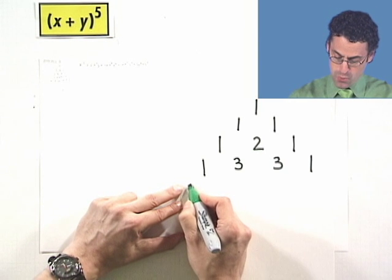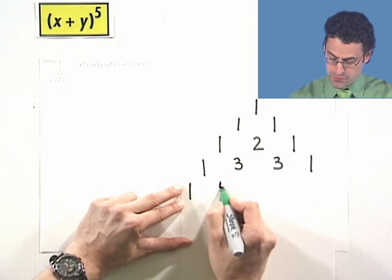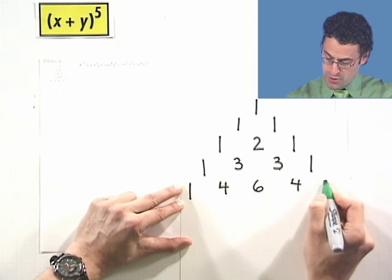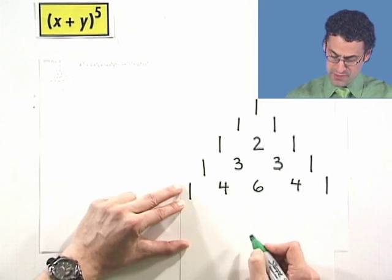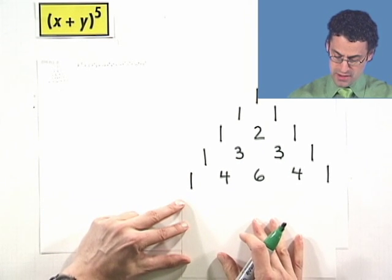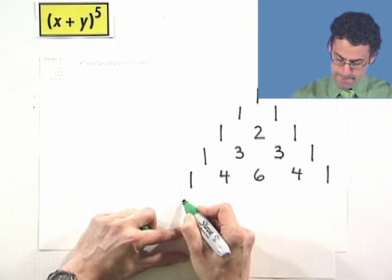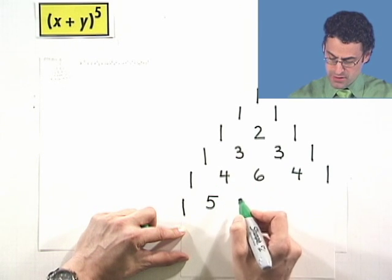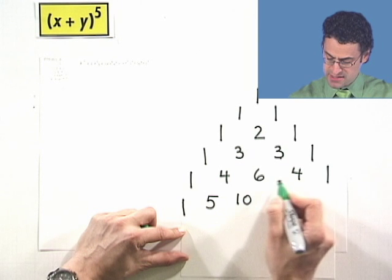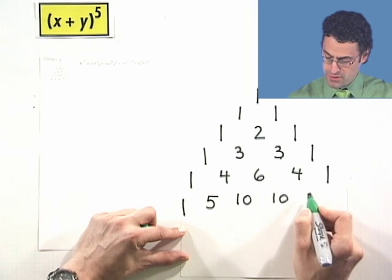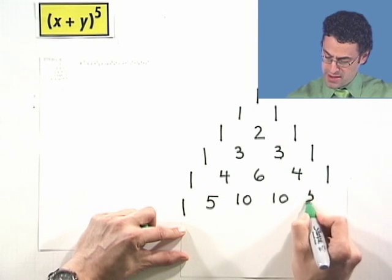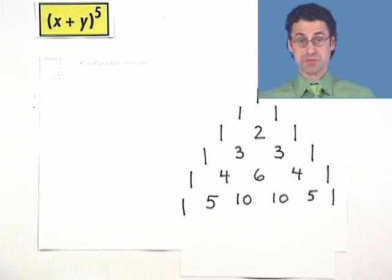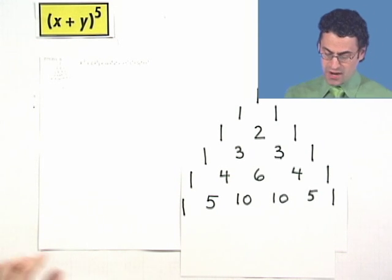See the pattern? If I do it again, I see a 1, 1 and 3 is 4, 3 and 3 is 6, 3 and 1 is 4, and then I always end with a 1. And then finally, if I do one more, I'll see 1. Then I see 1 and 4 make 5, 4 and 6 make 10, 6 and 4 make 10, 4 and 1 make 5, and then finally I end with a 1. And this keeps going. You can see the triangle keeps going. This is the Pascal Triangle.